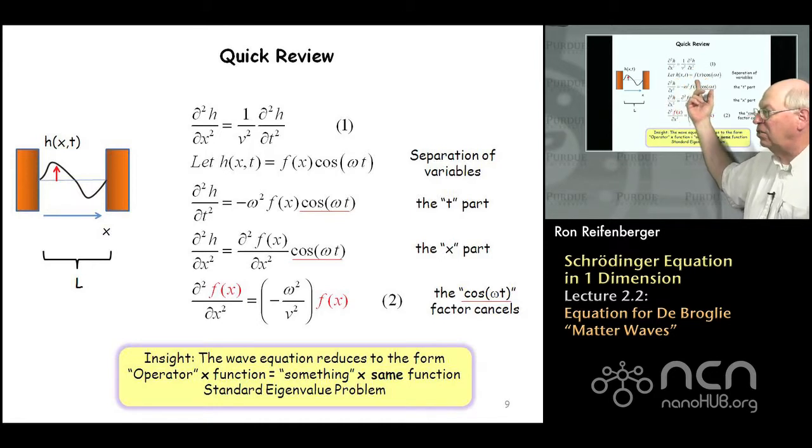And what we're going to do is we're going to write down this disturbance H in terms of, as a product of two functions. One is strictly a function of x, the other is an oscillatory function of time t. And the frequency omega, the angular frequency omega, is going to describe how that string vibrates as a function of time.